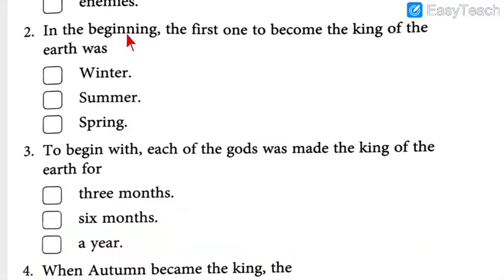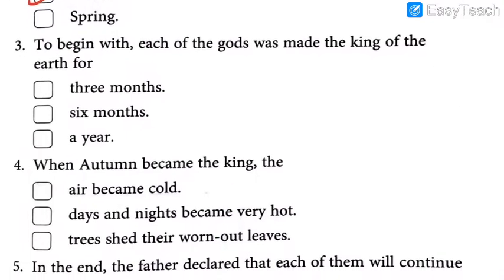Number two: In the beginning, the first one to become the king of the earth was — was it Winter, Summer, or Spring? Think about the answer. 5, 4, 3, 2, 1. The answer: The first one to become king was Summer, the eldest brother.